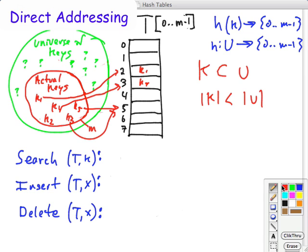So for example, here we had h of k1 is equal to 2, and here we had the collision h of k5 is equal to 5, and h of k3 equals 5. So a collision right here.